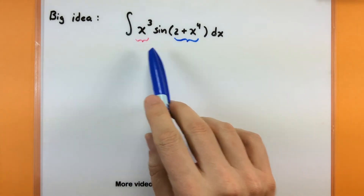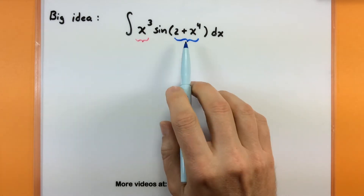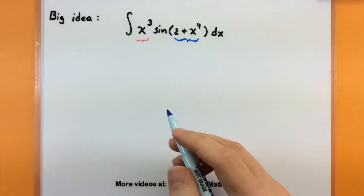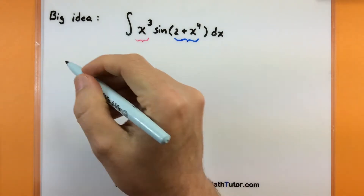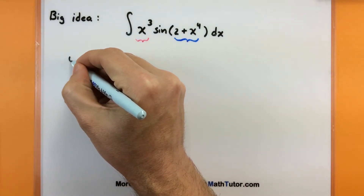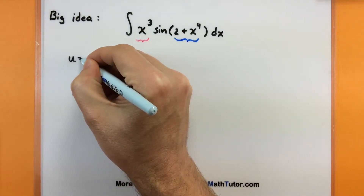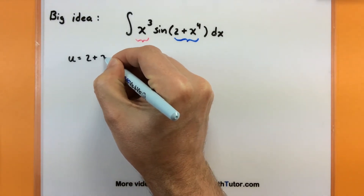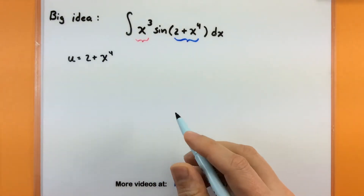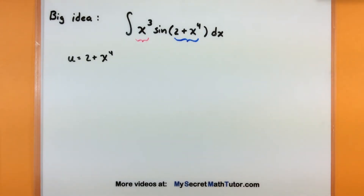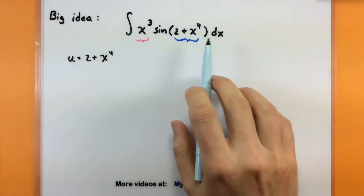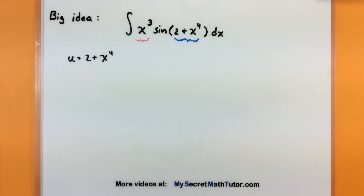As soon as we've identified those good pieces — the piece highlighted in blue — that's what we're going to call the u piece. So our very first step: let u equal 2 plus x to the fourth. This allows us to swap out all of that and just call it u. Now we have a lot of other x's in here that need to be replaced as well.